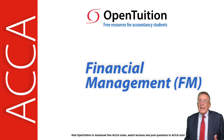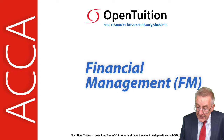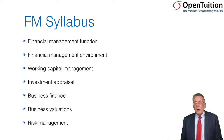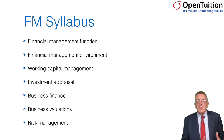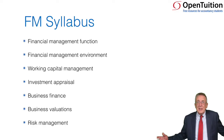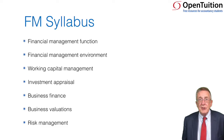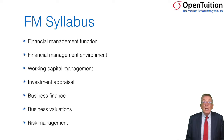Let me talk through basically what the exam is about: an outline of the syllabus, how it's examined, and how to go about studying for it. The financial manager's job is more long-term — unlike performance management paper F5, which focused on short-term decisions. It's the financial manager's job to decide how the company is going to raise long-term finance, whether by taking a long-term loan from the bank or issuing more shares.